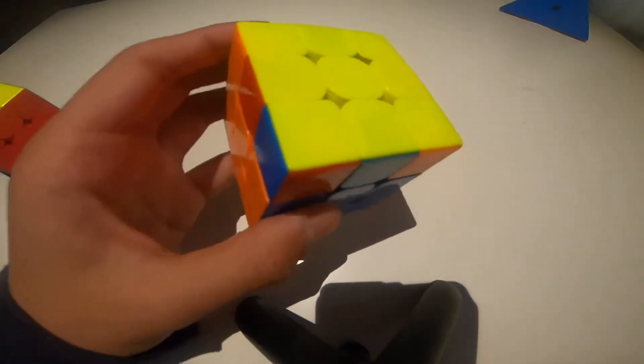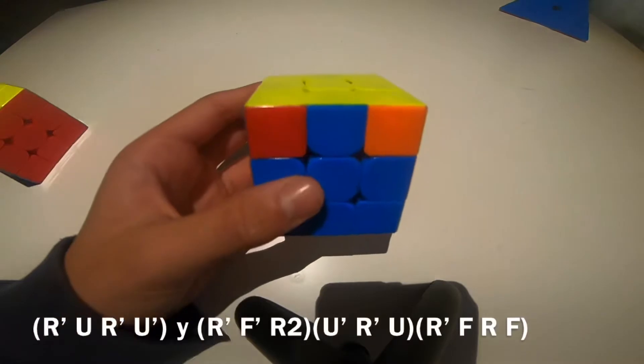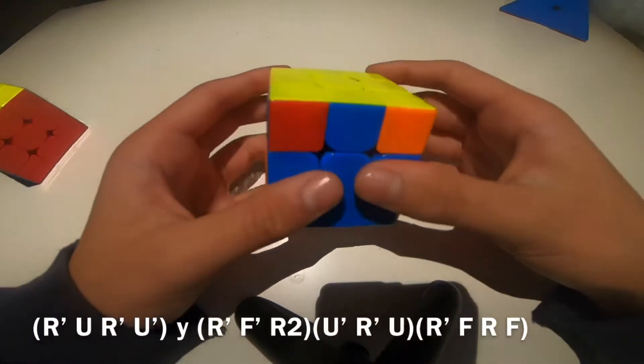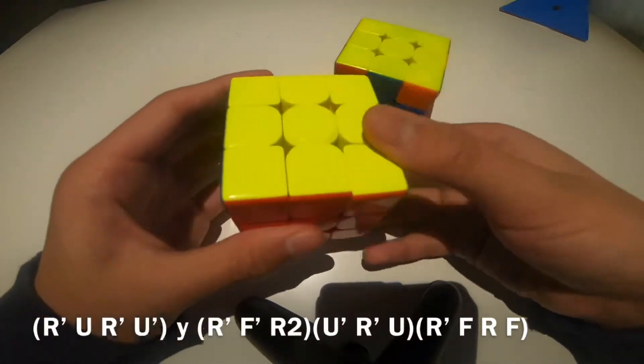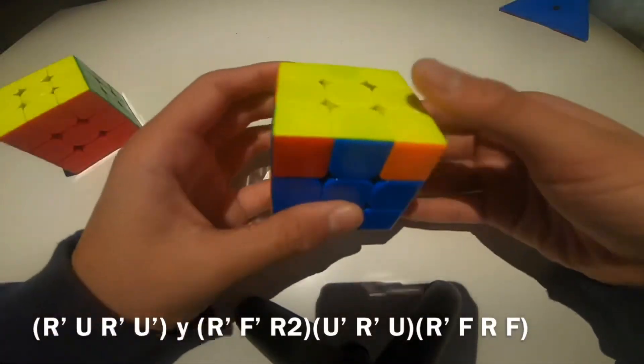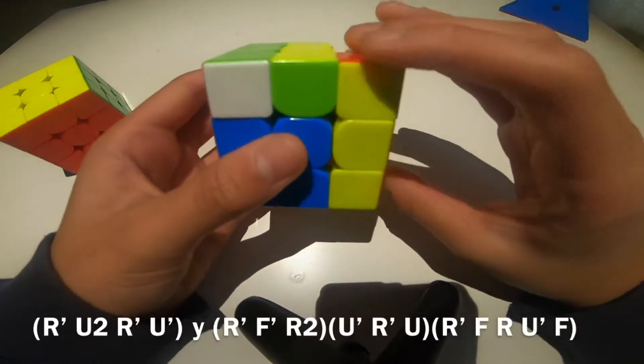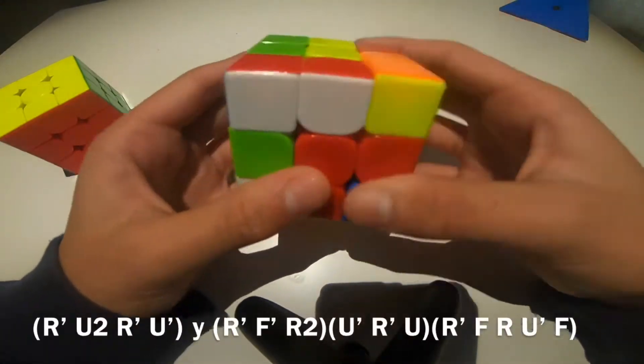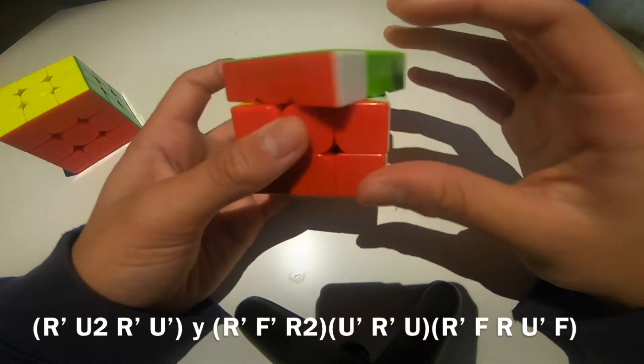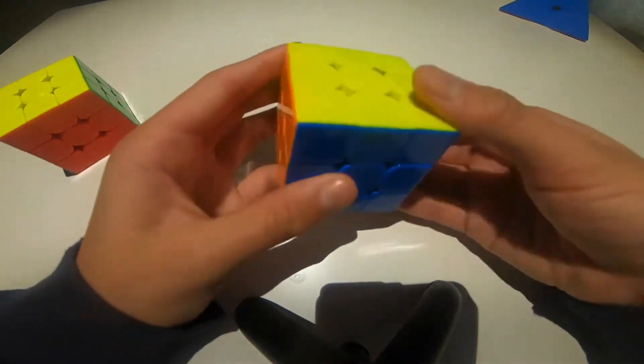This F-perm is literally the same thing, but there's one small modification. Instead of starting R' U R', you start with R' U2 R'. And then you basically do the same, except here you add a U'.